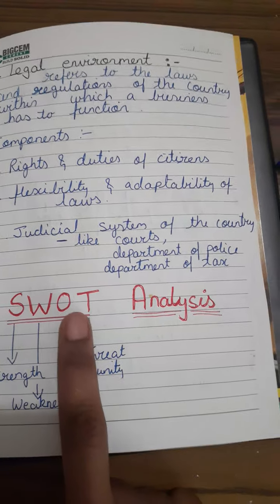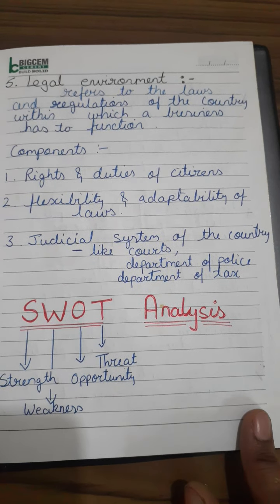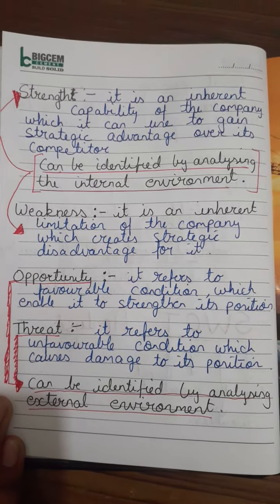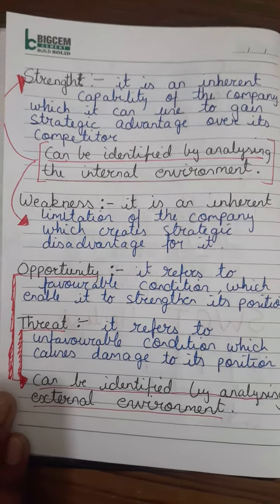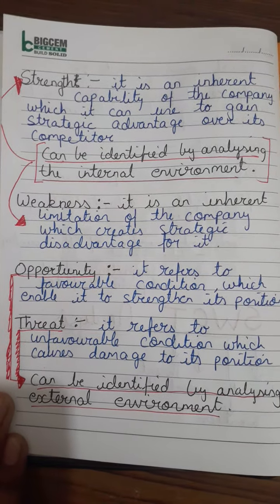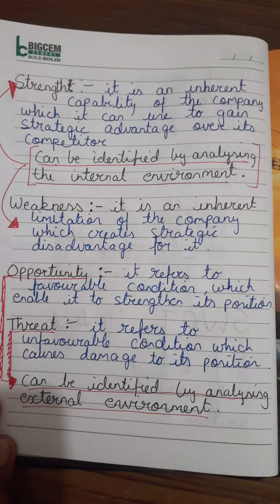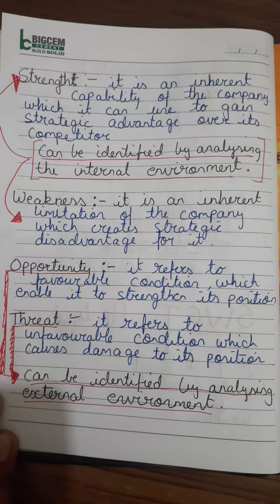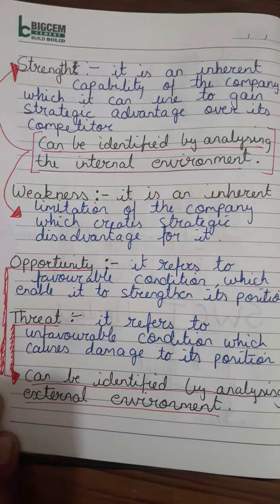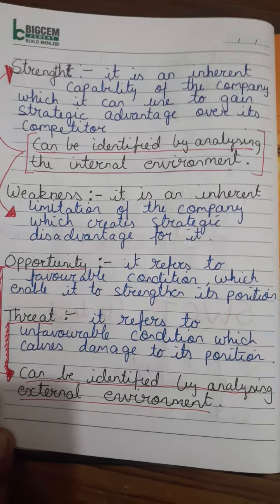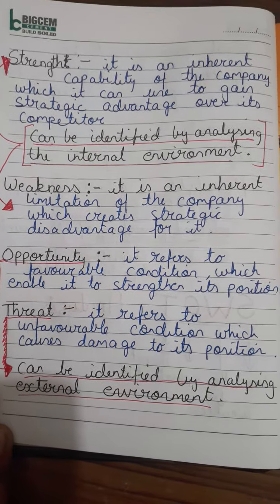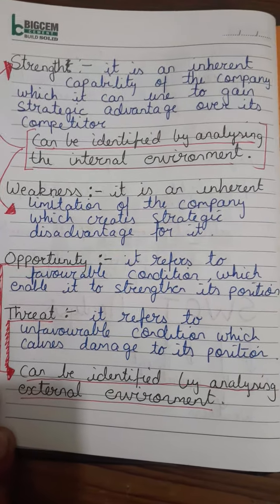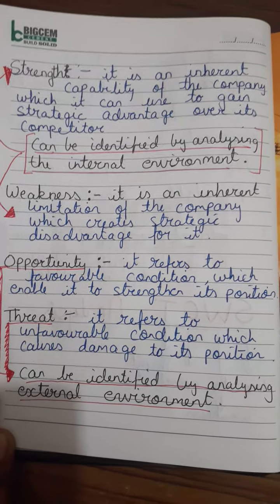SWOT stands for Strength, Weakness, Opportunity, and Threat. What does strength mean in connection with a company? Strength is an inherent capability of the company which it can use to gain strategic advantage over its competitor. Examples of strength for a company can be its patent, its brand reputation, its location, and cost advantage.